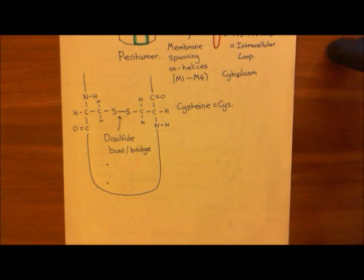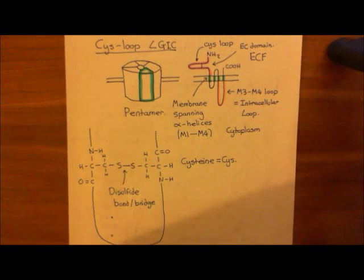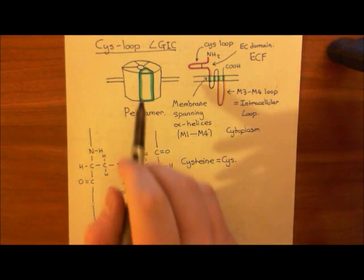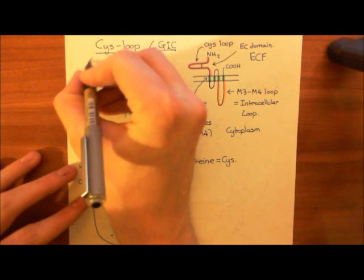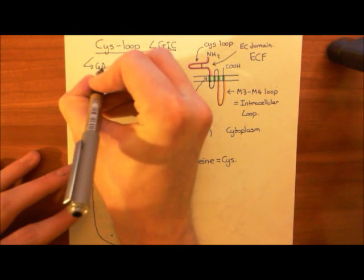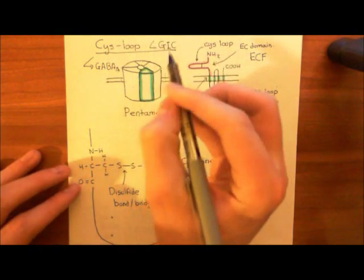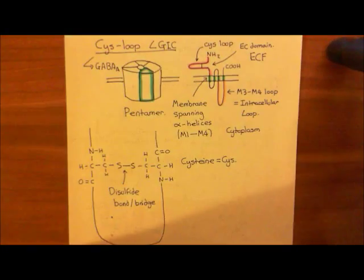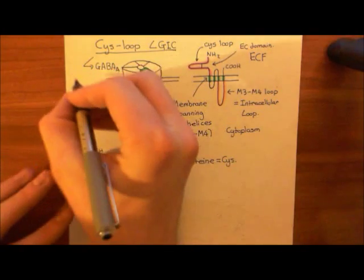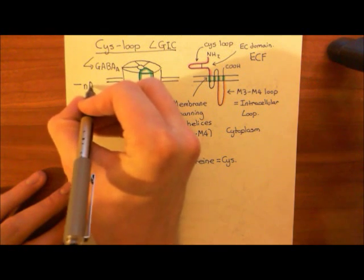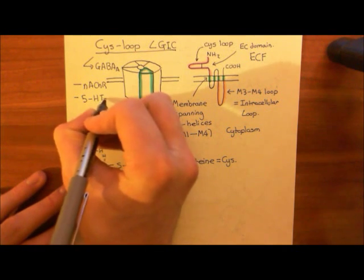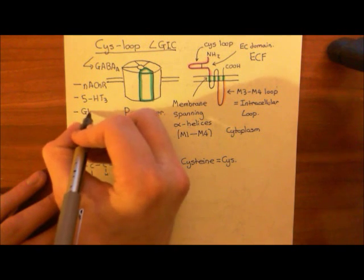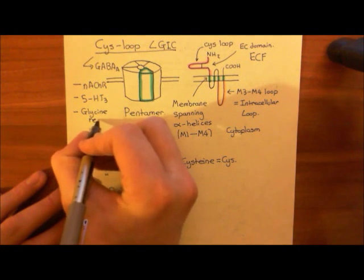That's why it's called a cys-loop ligand-gated ion channel — it's a pentamer. Cys-loop ligand-gated ion channels can also be referred to as pentameric ligand-gated ion channels, because they're made up of five separate receptor subunits. GABA-A receptors are a type of cys-loop ligand-gated ion channel but not the only type. Other important members of this family include the nicotinic acetylcholine receptors, the 5-HT3 receptors, and the glycine receptors in the spinal cord.